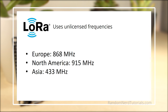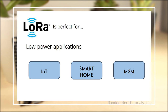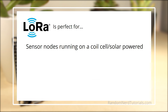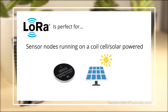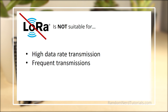LoRa's long-range and low-power features make it perfect for battery-operated sensors and low-power applications in Internet of Things, Smart Home, Machine-to-Machine communication, and much more. LoRa is a good choice for sensor nodes running on a coin cell or solar power that transmit small amounts of data. However, keep in mind that LoRa is not suitable for projects that require high data rate transmission, need very frequent transmissions, or are in highly populated networks.